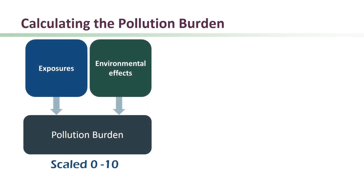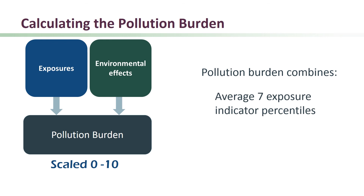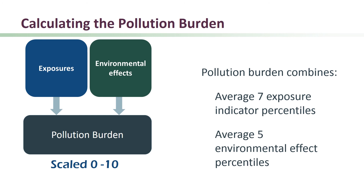Now let's take a look at scoring in more detail. After percentile values are calculated for each of the indicators, we can calculate the overall CalEnviroScreen score. First, the percentiles for the individual indicators in a component are averaged. The pollution burden score is calculated by combining the average of the seven exposure indicators and the average of the five environmental effects indicators. The environmental effects component is half-weighted.